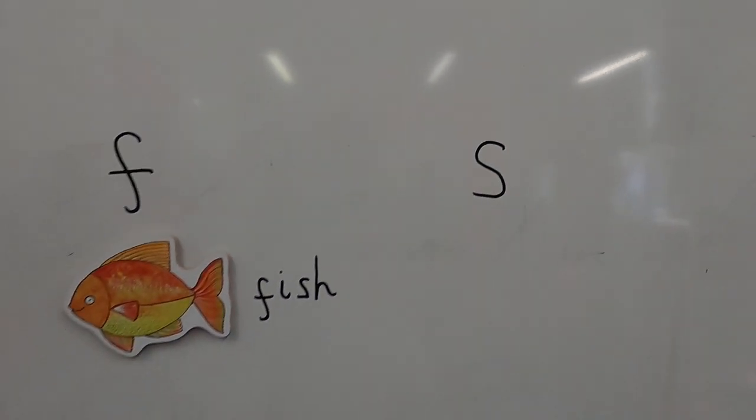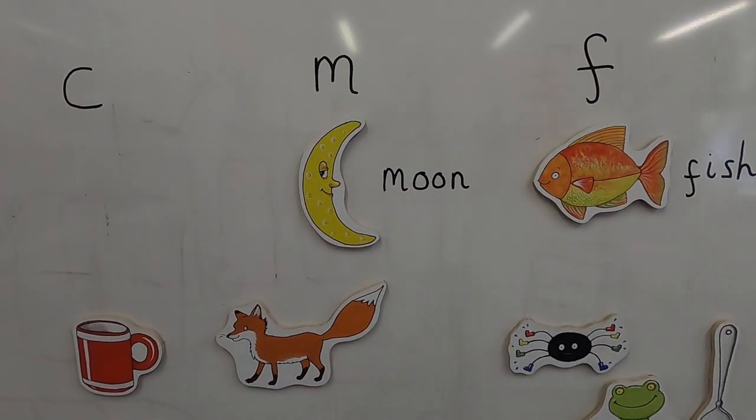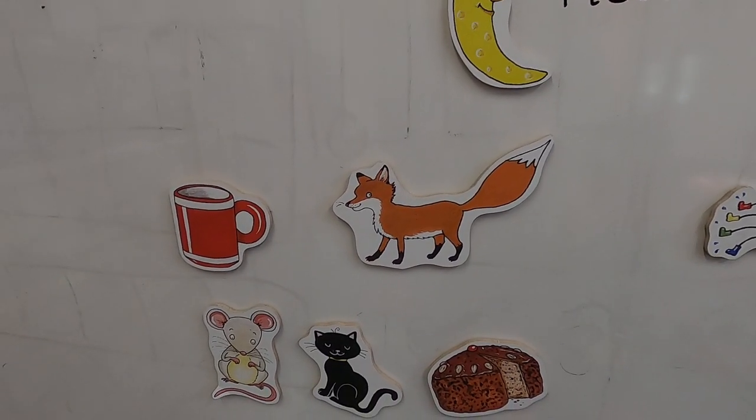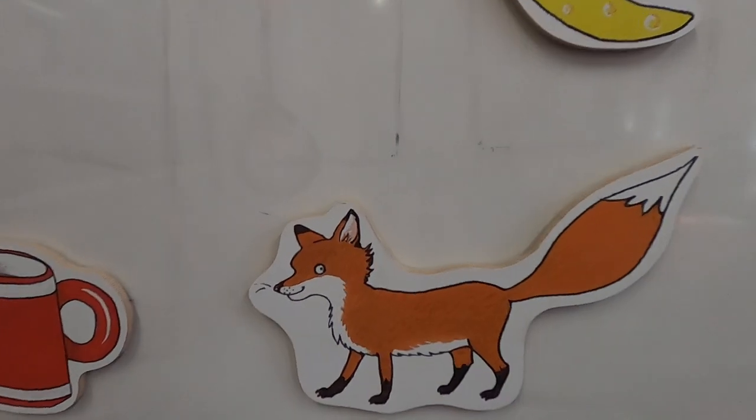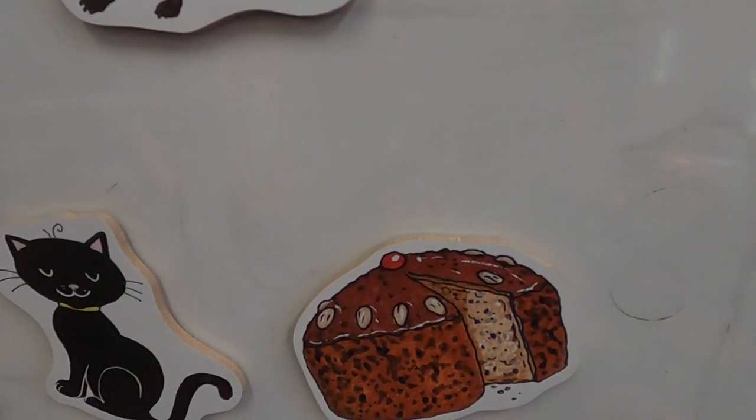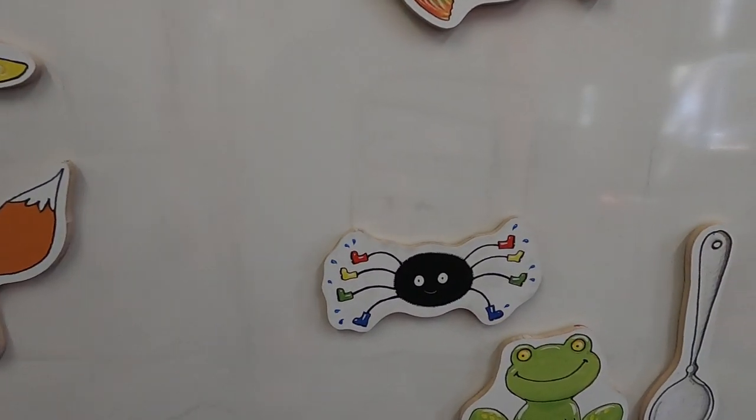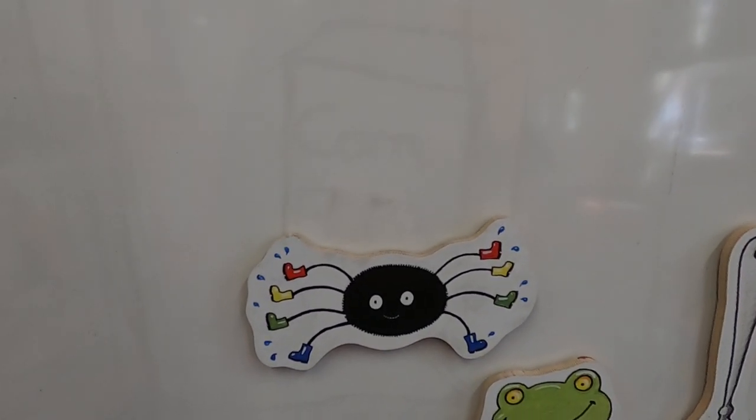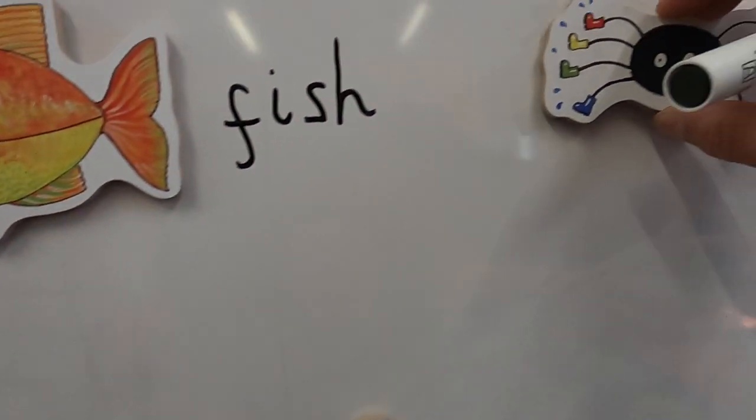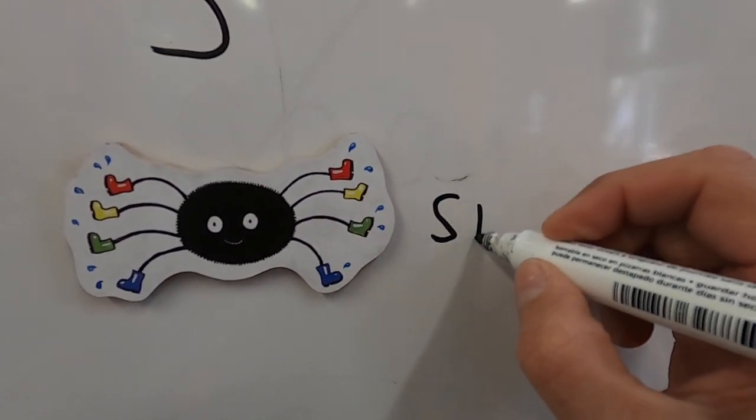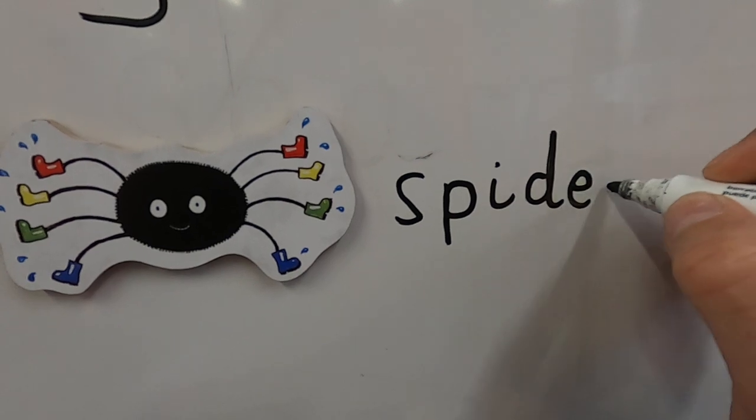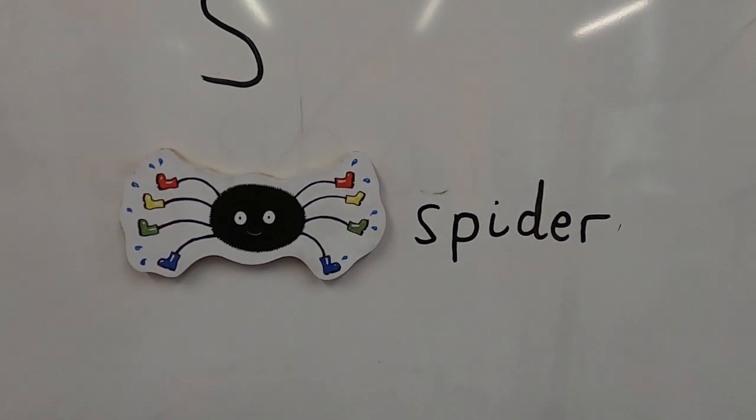Oh, let's find an S sound, apart from Simon. Super Simon. What have we got? S, S, S-fox. No. S-cake. No. S-pider. Spider. Spider. Yes. Spider. S-puh-s-i-d-u, spider. Good.